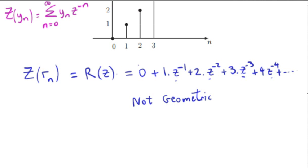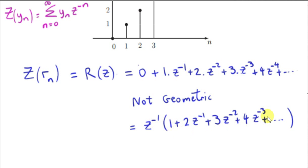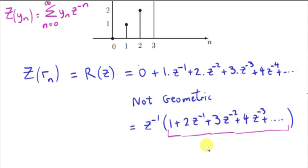However, something useful happens if we factor z to the power of minus 1 out of the series. Looking at what's inside the brackets, this thing is not a geometric series by itself, but it can be shown that it equals 1 minus z to the power of minus 1, all to the power of minus 2.